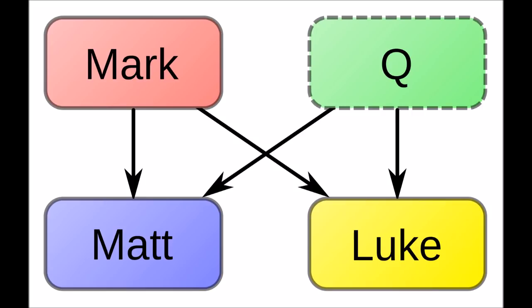Christian apologists reject Q because of the purely secular nature of the scholarship on which it is based. Specifically, the assumption that text common to more than one gospel must mean that somebody was copying somebody else is rejected in favour of the idea that divine inspiration led to the same wording appearing.